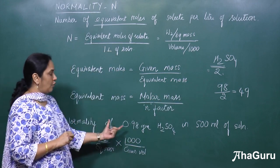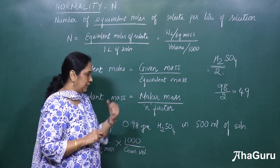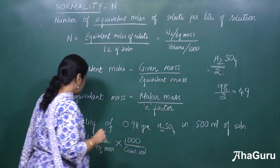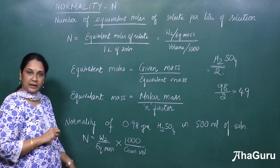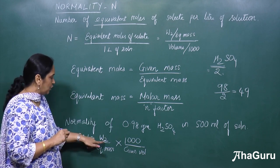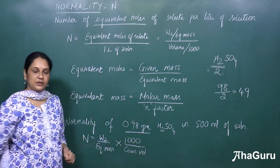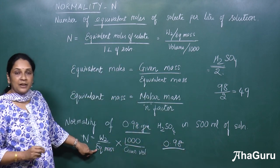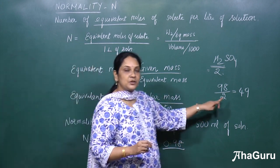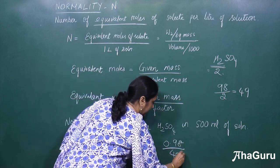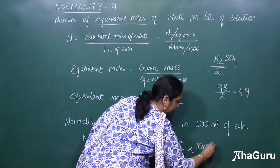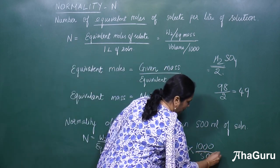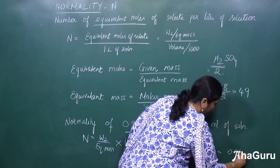Now let us do a numerical: find the normality of 0.98 grams of sulfuric acid in 500 ml of solution. The given volume is 500 ml. Normality equals weight of solute divided by equivalent mass, multiplied by 1000 divided by volume in ml. So: 0.98 divided by 49, multiplied by 1000 divided by 500, which gives 0.04 N.